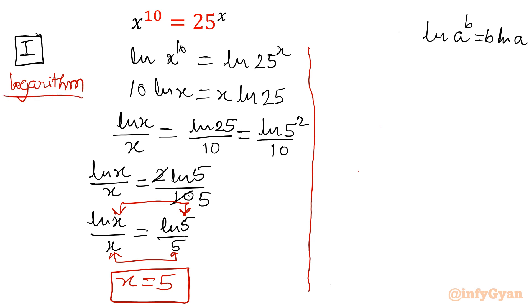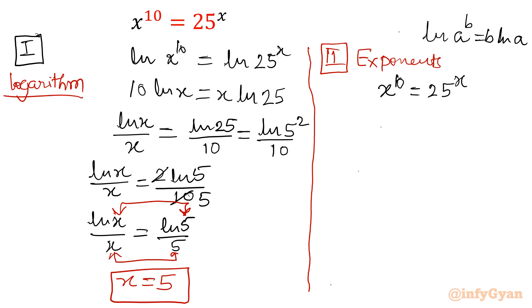Method 2 uses exponent properties. Starting again with x power 10 equal to 25 power x, I will raise both sides to the power 1 over 10. So x power 10, whole power 1 over 10, equals 25 power x, whole power 1 over 10.